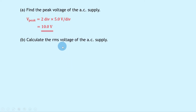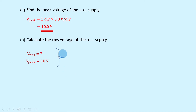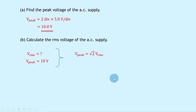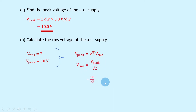Part B says to calculate the RMS voltage of the AC supply. We know V-peak is 10 volts and we use the relationship V-peak equals root 2 times V-RMS. Rearranging, we divide both sides by root 2 to get V-RMS equals V-peak over root 2. Substituting in gives 10 divided by root 2, which gives an answer of 7.1 volts.